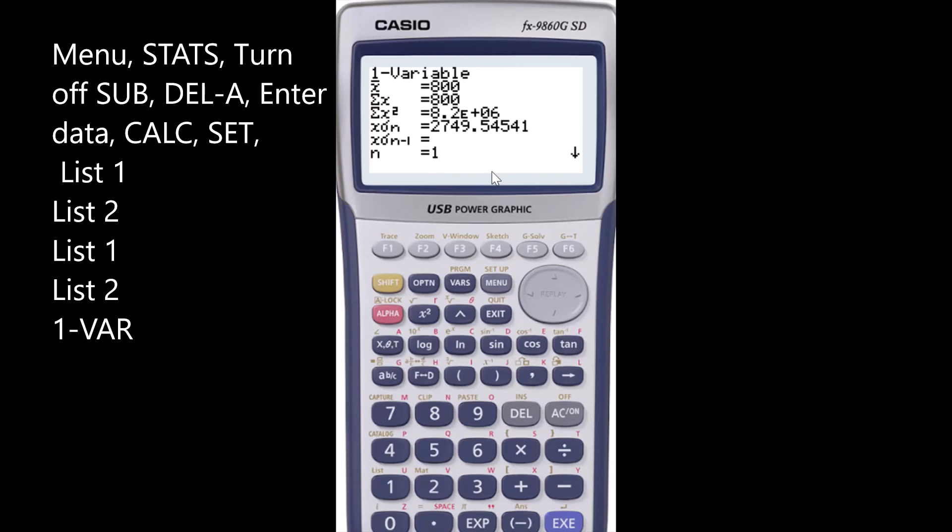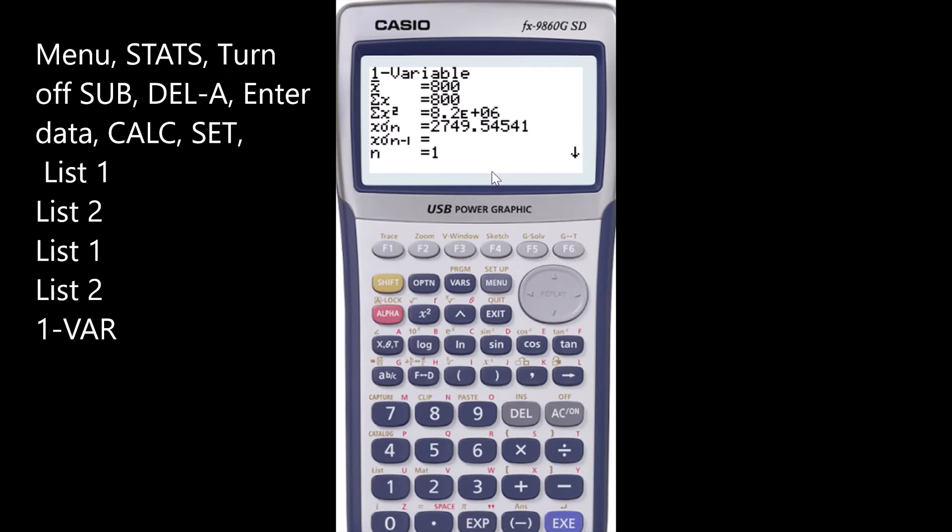Do not forget to turn off the sub name field and delete everything in the two cells, list 1 and list 2. Before you press calculate, go back and change the settings for the lists. It should appear as list 1, list 2, list 1, list 2. Then you're all good to go.